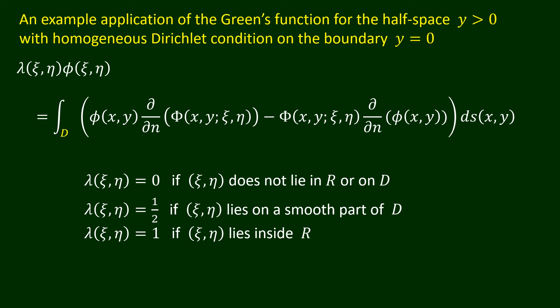Furthermore, we only need to collocate the discretized boundary integral equation at points on only the elements of D to generate the linear algebraic equations for finding the unknowns, giving rise to a smaller system of linear algebraic equations to be solved. With capital Phi given by the special Green's function, the parameter lambda in the boundary integral equation can be shown to have the value 0 if the point (xi, eta) lies on the line E. The programming of the boundary element procedure is detailed in the book A Beginner's Course in Boundary Element Methods.